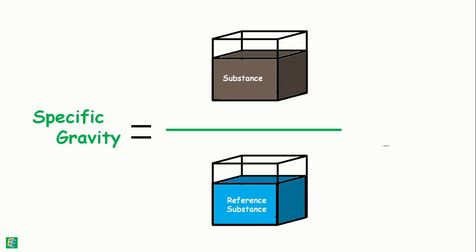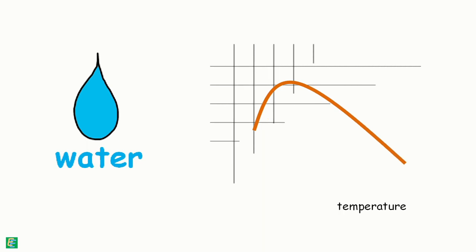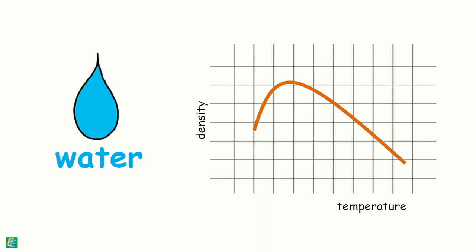We usually take water as the reference substance. But as we know, density of water varies with its temperature. So, we take the densest water, which is at the temperature of 4 degrees.